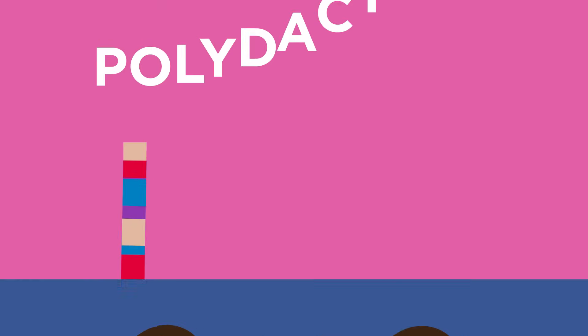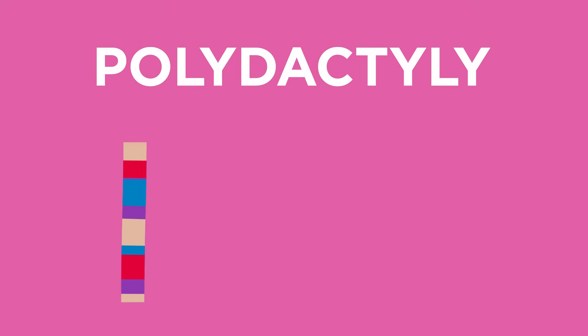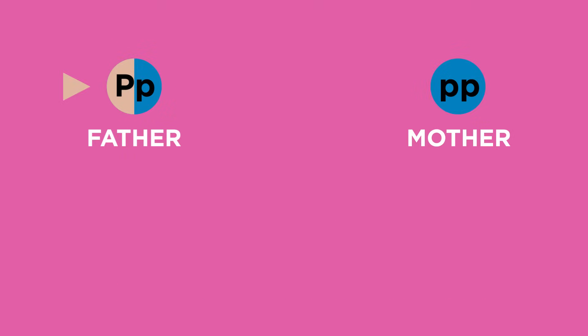So going back to polydactyly. Polydactyly is caused by a dominant allele shown as a capital P. You only have to have one copy of this allele to have the condition.